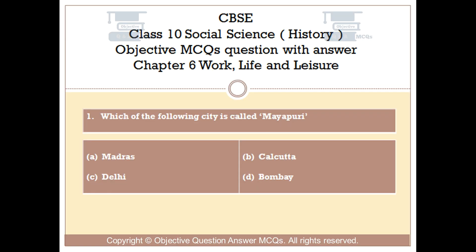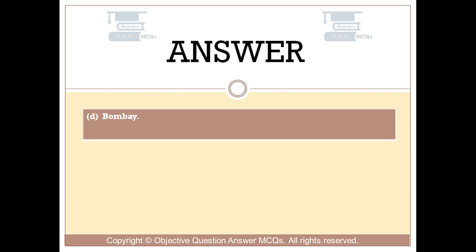Question number 1: Which of the following city is called Myupuri? Option A: Madras. Option B: Calcutta. Option C: Delhi. Option D: Bombay. The right answer is Option D: Bombay.